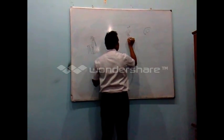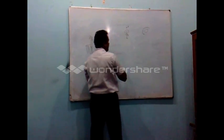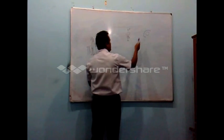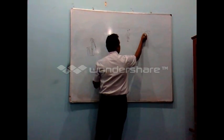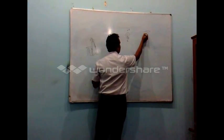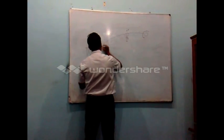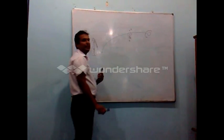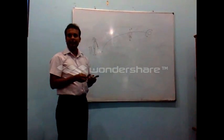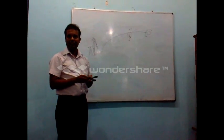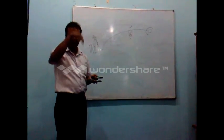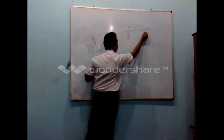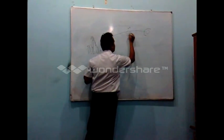Now what happens is the batsman is expecting the ball to follow a normal path and land here. But because of the downward force created by the pressure difference, the ball will actually land somewhere lower than expected.